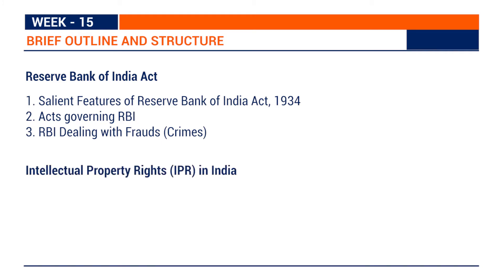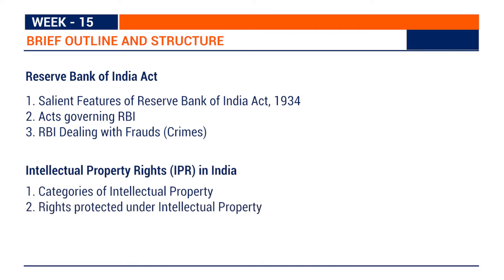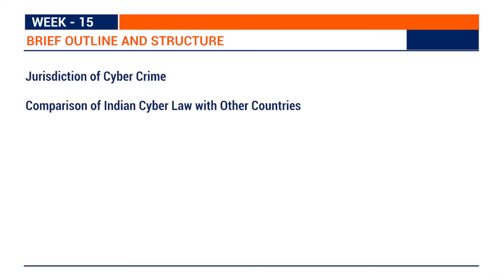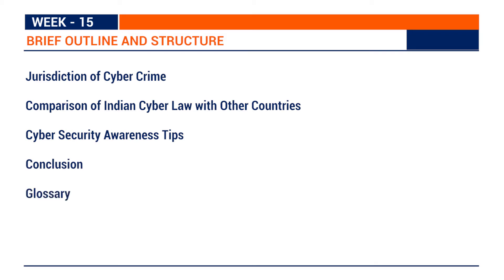The structure continues with Intellectual Property Rights in India, covering various categories of intellectual property and rights protected under intellectual property. Next is the jurisdiction of cyber crime, followed by a comparison of Indian cyber law with laws from other countries, cyber security awareness tips, and finally a conclusion, glossary, and references in the form of books and web links.